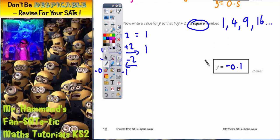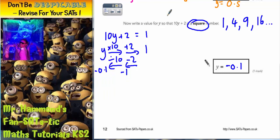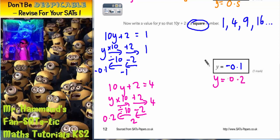Let's see what would have happened if we'd have used a different value. Well, we could have used 4. So we could have said 10y plus 2 equals 4. y times 10, same method again, add 2, equals 4. Reverse it backwards, take 2, opposite of times 10 is divide by 10. Then 4 take away 2 would have been 2. And 2 divided by 10 would have been 0.2. So y could have also been 0.2.